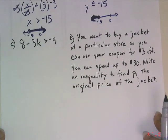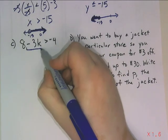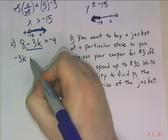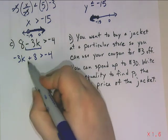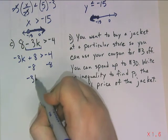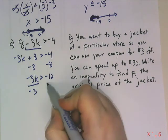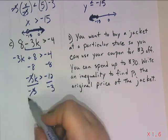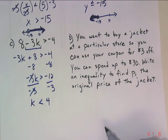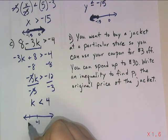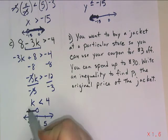For letter C, a two-step inequality: rewrite in standard form as -3k + 8 > -4. Subtract 8 from both sides, then divide both sides by negative 3. Since I divided by a negative, the inequality arrow changes direction. Negative 12 divided by negative 3 is 4, so k < 4, graphed with an open dot on 4 and an arrow to the left.